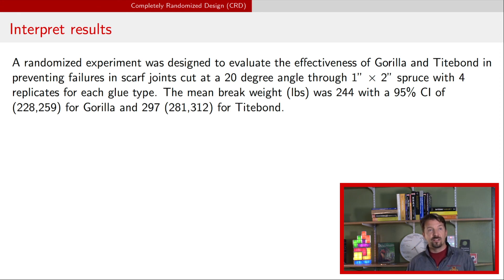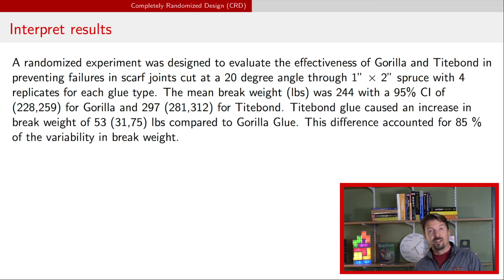Now the real interesting question here is what is the difference between Titebond and Gorilla so you probably want to address that. So Titebond glue caused and notice the causal statement here it's not just associated because you randomly assign the treatment you can make a causal claim. So Titebond caused an increase in break weight of 53 pounds with an uncertainty interval between 31 and 75 compared to Gorilla glue. So Titebond was an improvement over Gorilla glue. And finally this difference accounted for 85% of the variability in break weight. So a nice succinct paragraph representation or summarization of the analysis that you did.